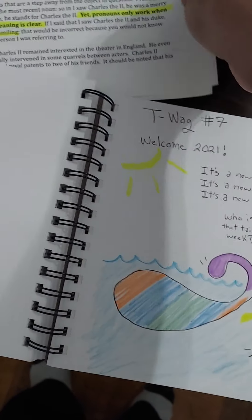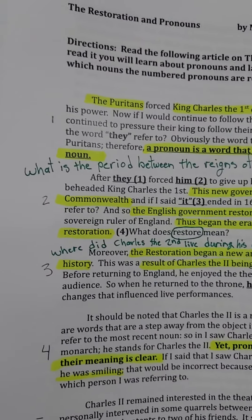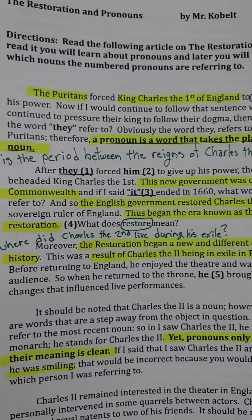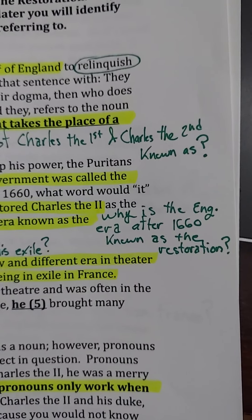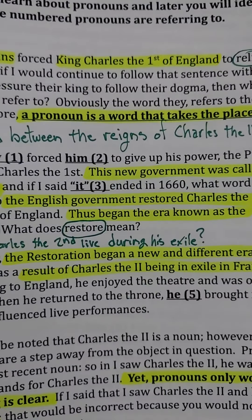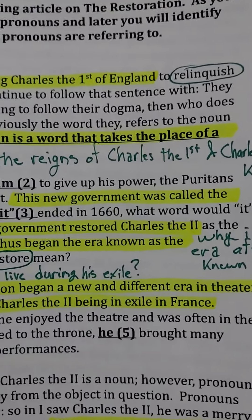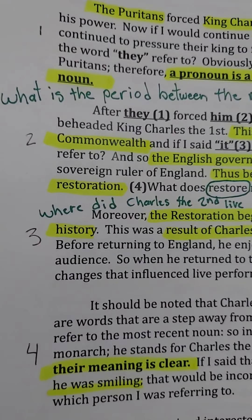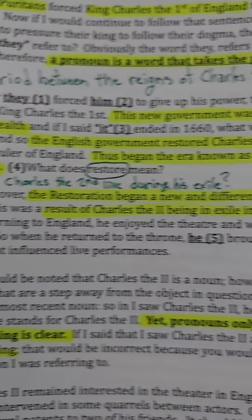Just a quick look to help you with Tuesday's work — I took notes on here. What is the period between the reigns of Charles the First and Charles the Second known as? That's paragraph two, and it says Commonwealth. Then you have: why is the English era after 1660 known as the Restoration? Because they restored Charles the Second to the throne. What does restore mean? Paragraph three. Where did Charles the Second live during his exile? The answer is in paragraph three.